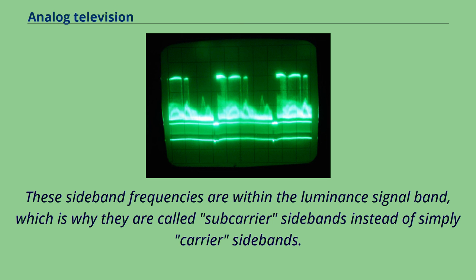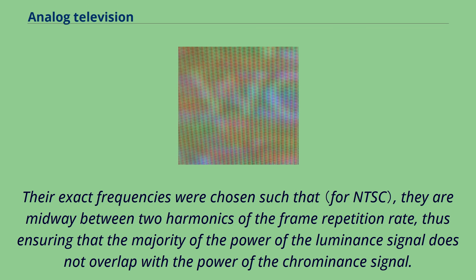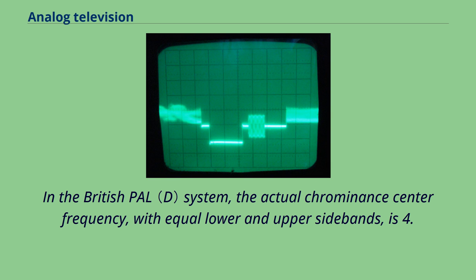In the British PAL system, the actual chrominance center frequency, with equal lower and upper sidebands, is 4.43361875 MHz, a direct multiple of the scan rate frequency. This frequency was chosen to minimize the chrominance's beat interference pattern that would be visible in areas of high color saturation in the transmitted picture.